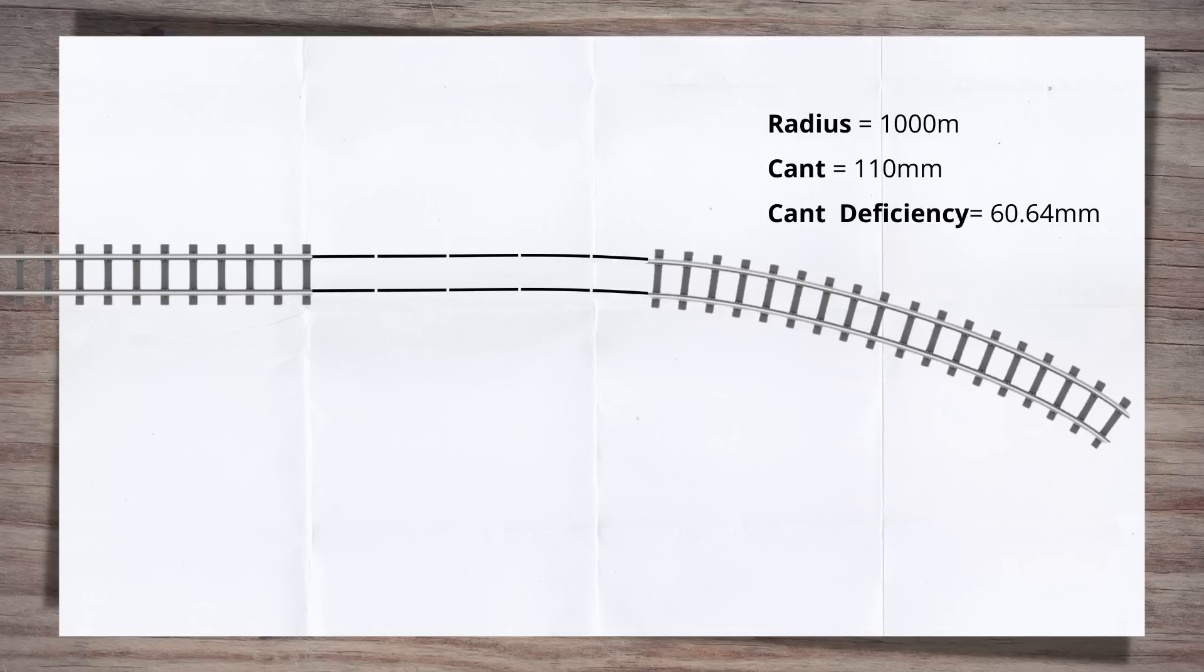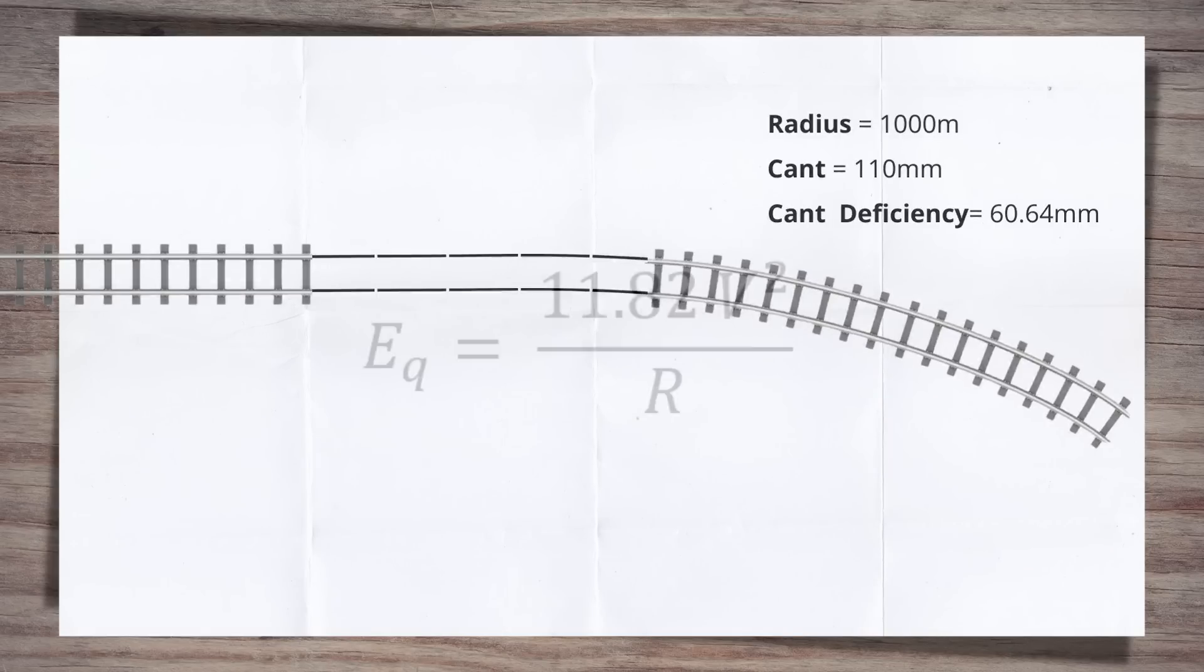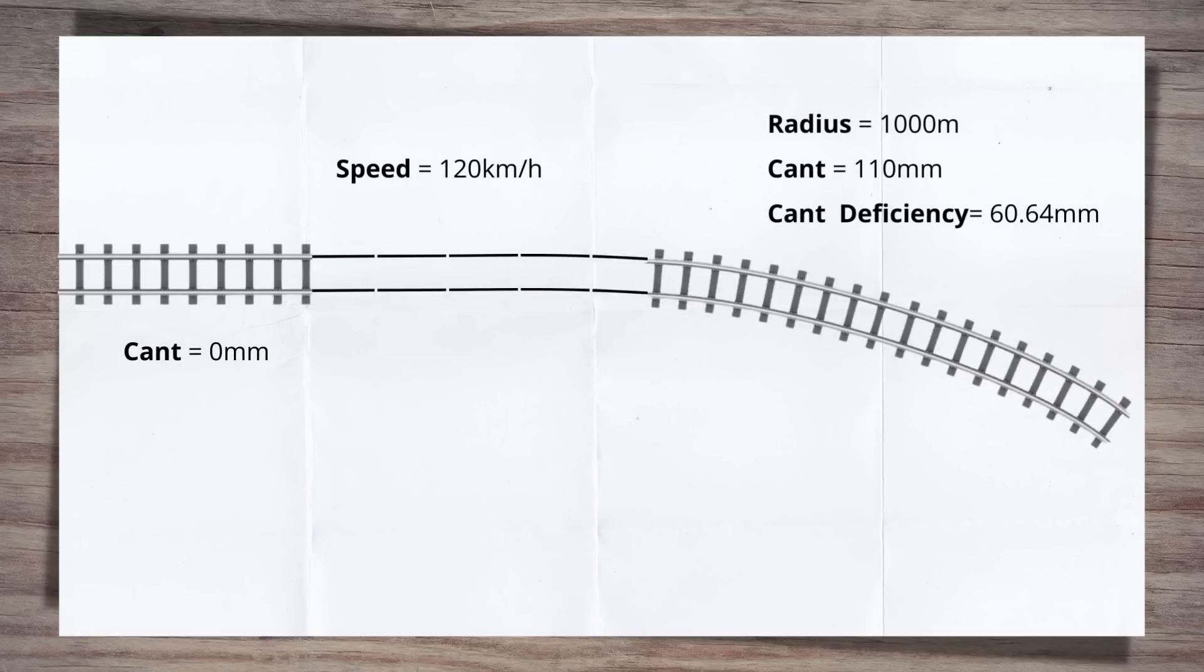Shall we do an example to walk through the process? For this, we'll imagine we're a designer, so we want to find the ideal and the shortest length transition. The transition we are looking at will be between a section of straight track and a curve. The curve has a thousand metre radius with a 110 millimetre cant applied to it. The cant deficiency is 60.64. This is the equilibrium cant minus the applied cant. The equilibrium cant is calculated with the equation shown now. The straight has zero mil cant. Lastly, the line speed is 120 kilometres an hour, around 75 miles an hour. So now we know the two elements we are linking, let's look at the transition.